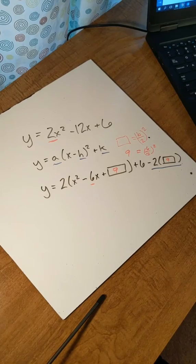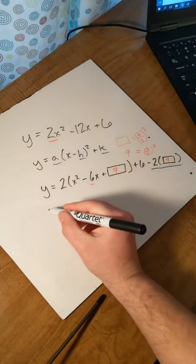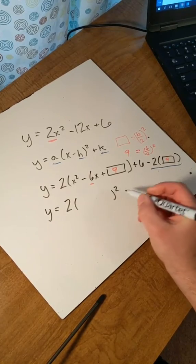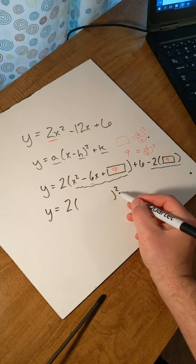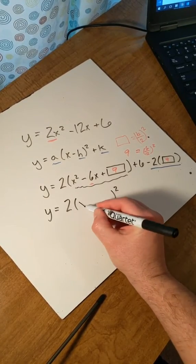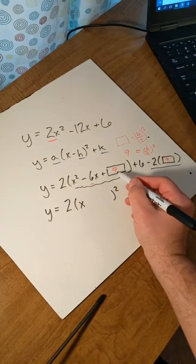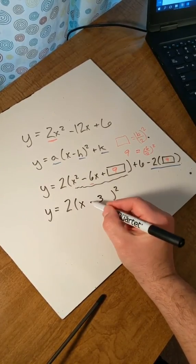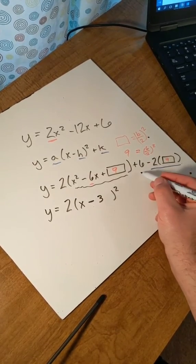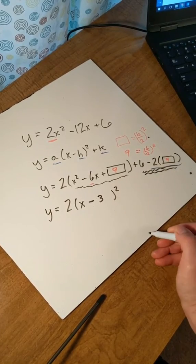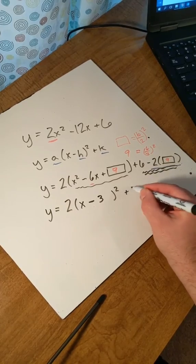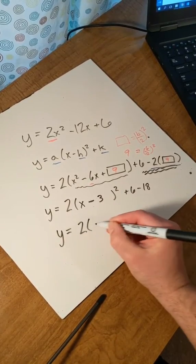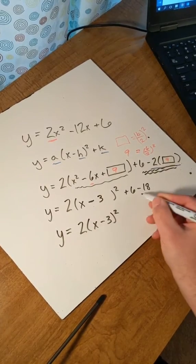Now that we have that, we're going to start rewriting this polynomial. We get y equals 2, and now this becomes a perfect square trinomial. We can turn it into a factored trinomial squared by taking the square root of x squared, which is x, and also taking the square root of 9, which is 3 — but it's going to be a minus 3, because the middle sign carries down. We still have the rest to figure out for k. We've got plus 6 minus 2 times 9, which is 18. So our answer in standard form is 2 times x minus 3 squared, minus 12.